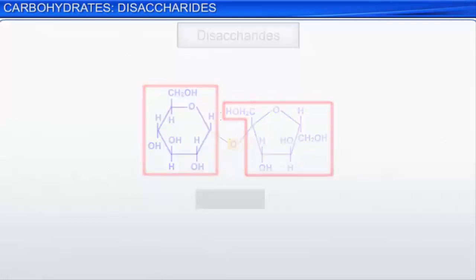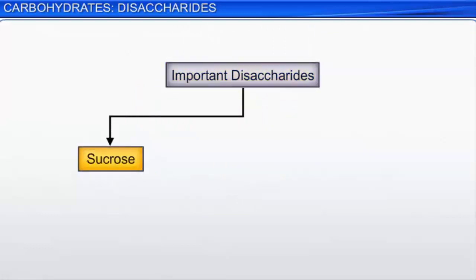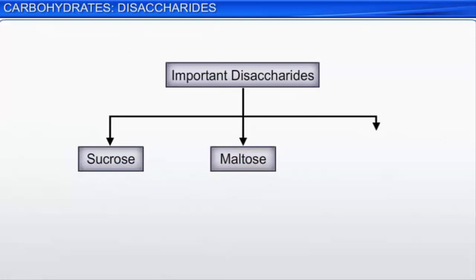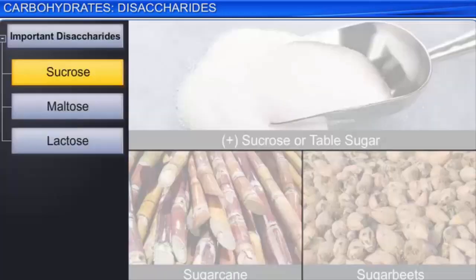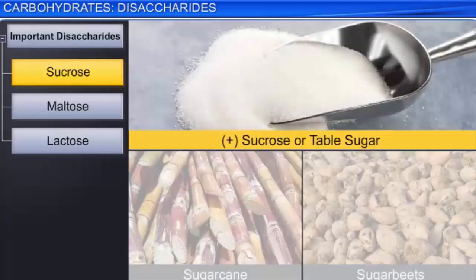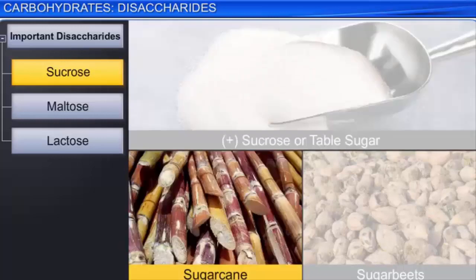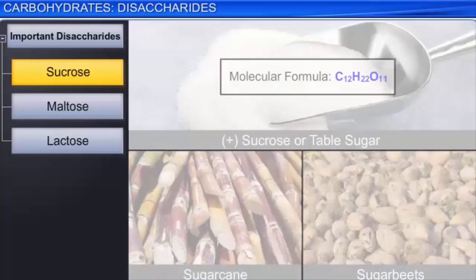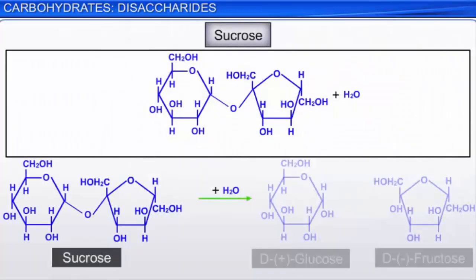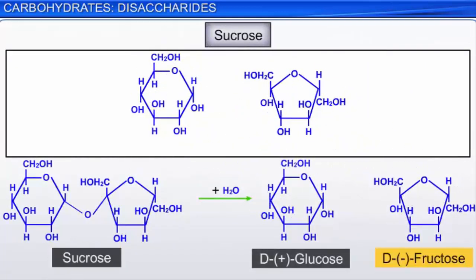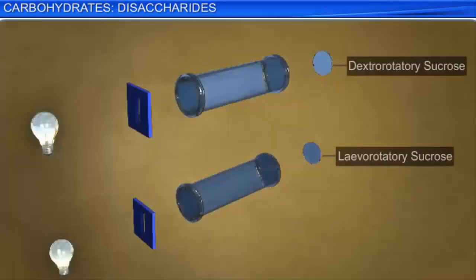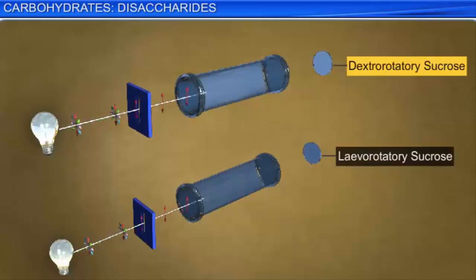The three most important disaccharides are sucrose, maltose, and lactose. The well-known disaccharide sucrose, or table sugar, is obtained from sugar cane or sugar beets. It has the molecular formula C12H22O11. The hydrolysis of sucrose yields an equimolecular mixture of D-plus-glucose and D-minus-fructose. Solutions of sucrose are dextrorotatory, but when sucrose is hydrolyzed, it becomes levorotatory. The optical rotation of D-glucose is +52.7 degrees, and that of D-fructose is −92.4 degrees.